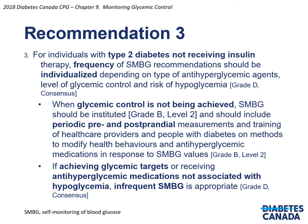Recommendation 3: For individuals with type 2 diabetes not receiving insulin therapy, frequency of SMBG recommendations should be individualized depending on the type of anti-hyperglycemic agents, level of glycemic control, and risk of hypoglycemia. When glycemic control is not being achieved, self-monitoring of blood glucose should be instituted and should include periodic pre- and postprandial measurements and training of healthcare providers and people with diabetes on methods to modify health behaviors and anti-hyperglycemic medications in response to SMBG values. If achieving glycemic targets or receiving anti-hyperglycemic medications not associated with hypoglycemia, infrequent SMBG is appropriate.